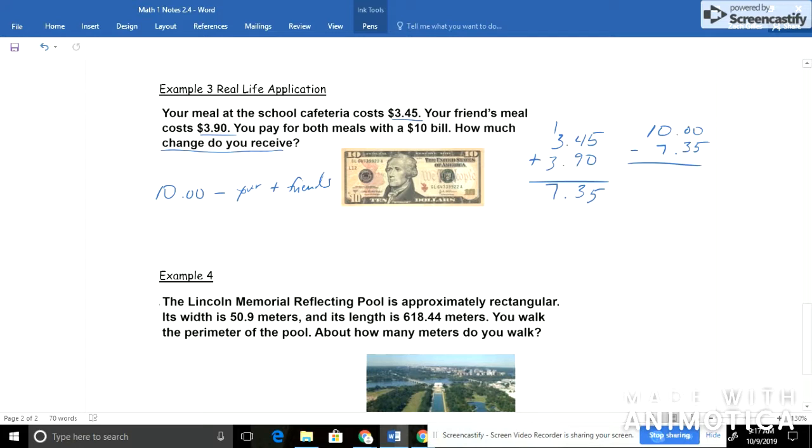0 minus 35 you can't do. Let's borrow. This would be a 9. And this would then become 100. So the difference between 135, well, that would be 65. And 9 minus 7 would be 2. If you can't do that mental math there, that's okay. Just go about subtracting like normal. So how much change do you receive? $2.65 is what you get back or what you should get back from the cashier of the cafeteria.